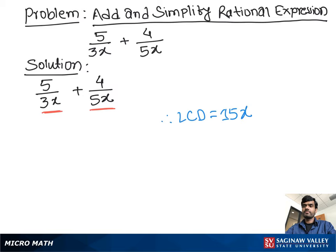Now our LCD, lowest common denominator, is 15x for both terms. Now first job is to make each term's denominator same. So we multiply first term with 5, both numerator and denominator, and the second term we multiply with 3, both numerator and denominator, to make both terms' denominator same.